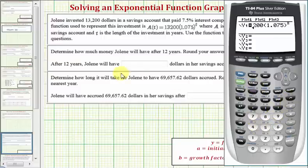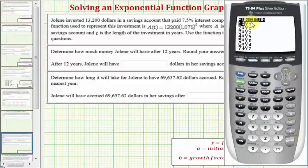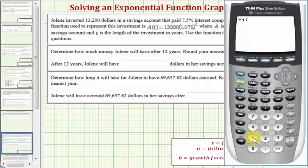And now there are several ways to find our function value, A of 12. We could just substitute 12 for t, but because we already have our function here in Y1, we can go back to the home screen by pressing second mode, and we could press vars, right arrow, enter, select Y1 by pressing enter, and then in parentheses, enter 12. So Y1 of 12 is A of 12.